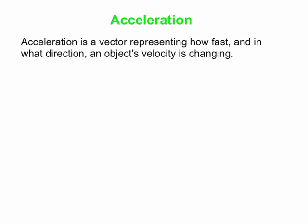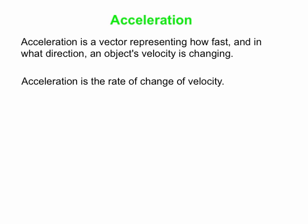So what is acceleration, anyway? Well, acceleration, first of all, is a vector. It represents how fast and in what direction an object's velocity is changing. More succinctly, we can say that acceleration is the rate of change of velocity — the time rate of change of velocity.